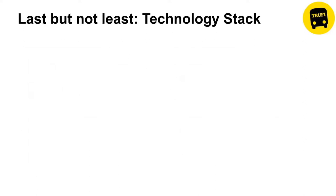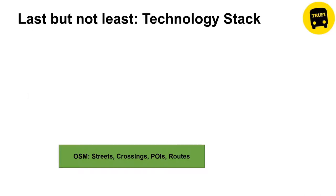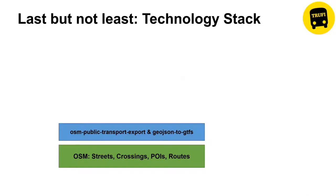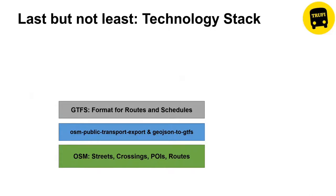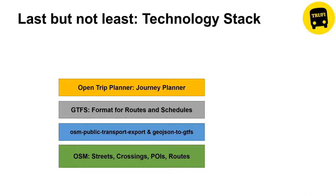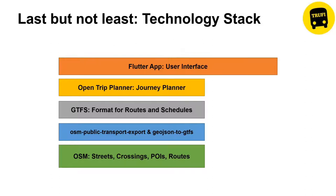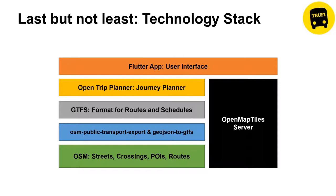The technology stack: OpenStreetMap is the basis — streets, crossings, points of interest, and bus routes. We have tooling to create GTFS and check OSM lines. The GTFS is published to OpenTripPlanner for journey planning. On top is the Flutter app as the user interface. The main part of the app is the map itself, so you need to use MapTiler or OpenMapTiles server to provide the maps.